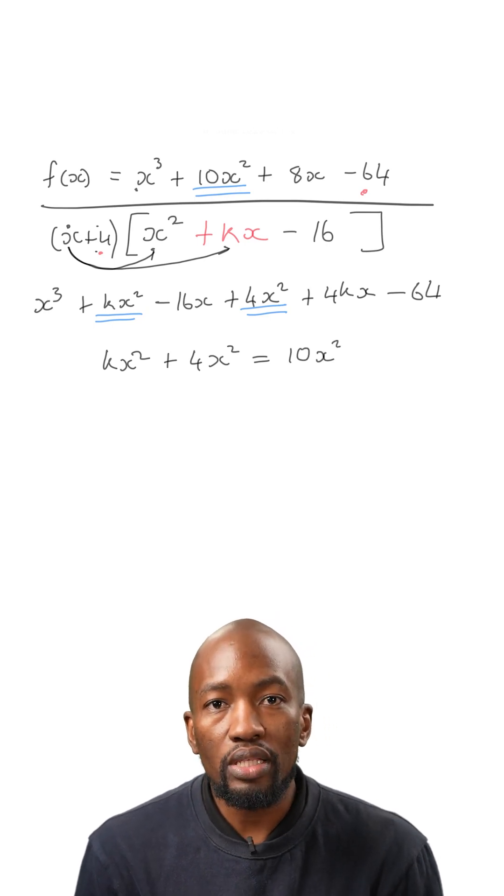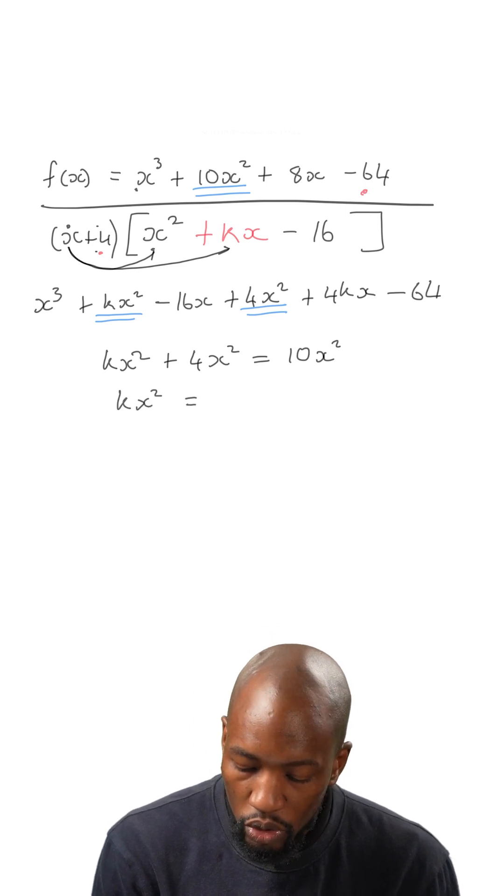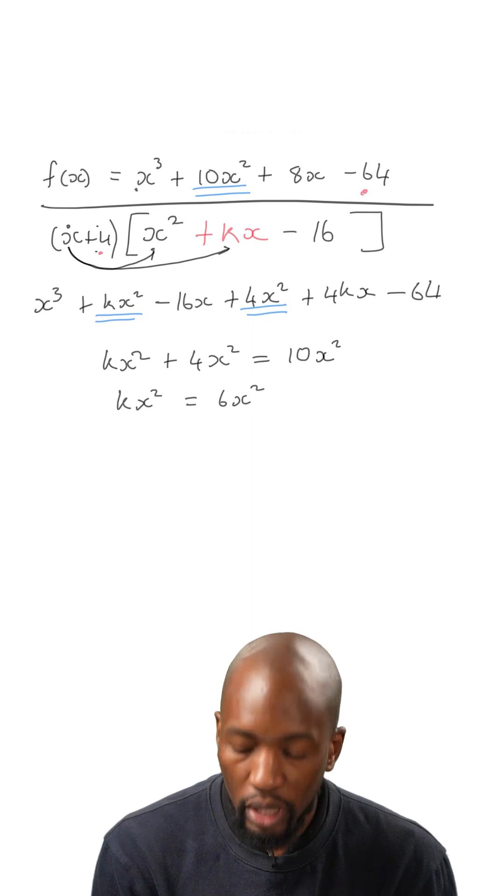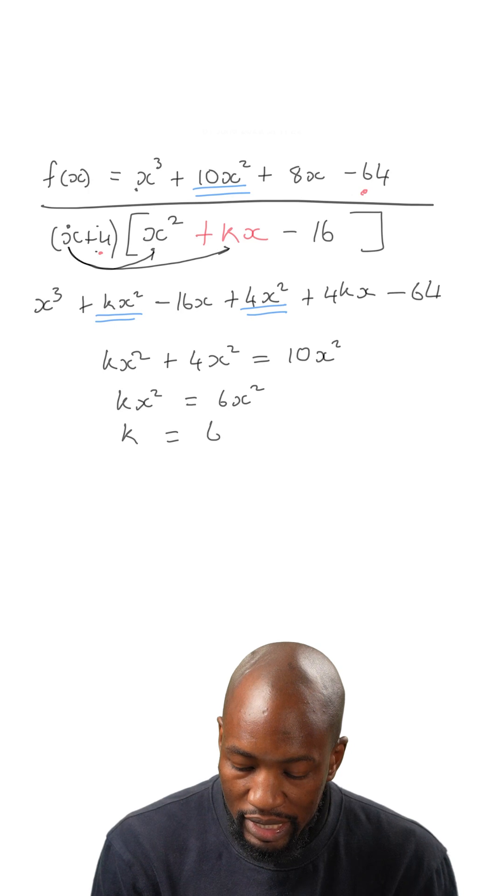Now all we need to do is solve for k. So kx squared will be equal to 6x squared. Then finally solving for k, we will have k is equal to 6.